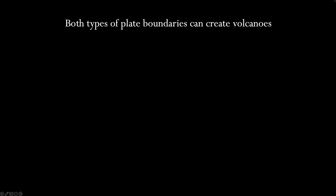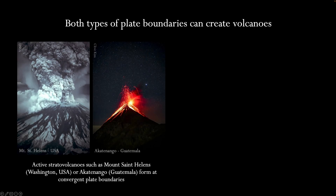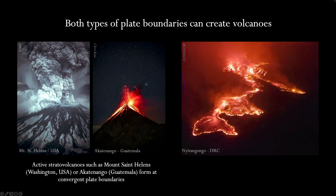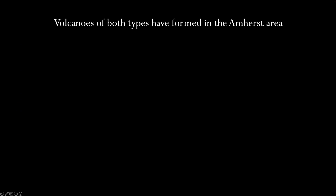Both convergent and divergent plate boundaries can create volcanoes. Explosive stratovolcanoes, such as Mount St. Helens, occur at convergent plate boundaries. More effusive volcanoes form at divergent plate boundaries, but most of these volcanoes today erupt on the ocean floor. Volcanoes in both convergent and divergent plate settings have erupted in the Amherst area, forming the rocks that lie beneath our feet.